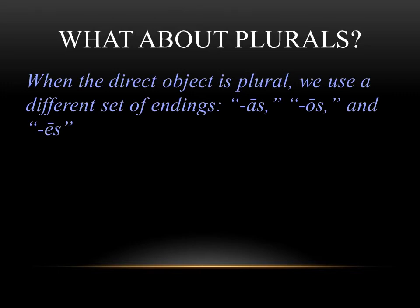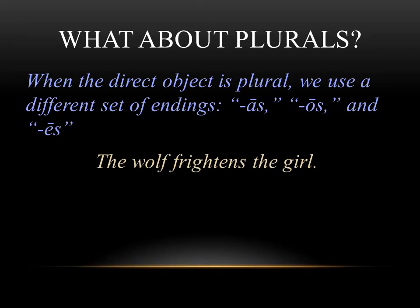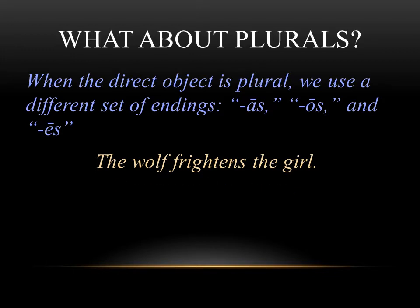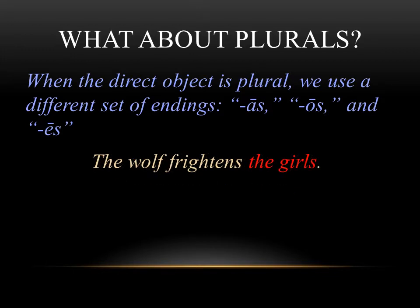But what if you wanted to make the direct object plural? When you have a plural direct object, we use a different set of endings — specifically, we're going to use -as, -os, and -es. So if we wanted to make that plural and say the wolf frightens the girls, we wouldn't say puellam anymore. We would switch it to lupus puellas terret. Now we've changed the number from singular to plural, and it means the wolf frightens the girls.